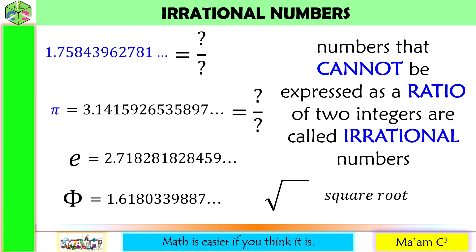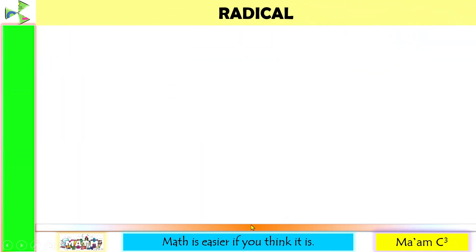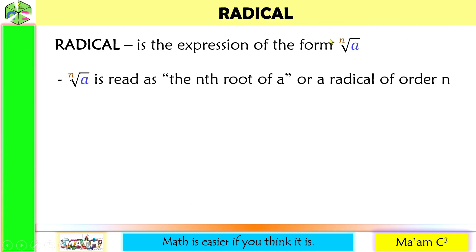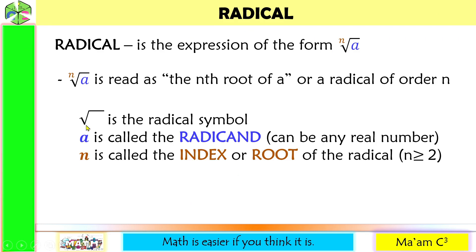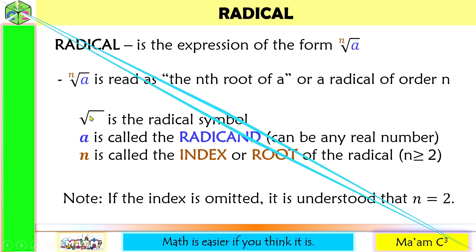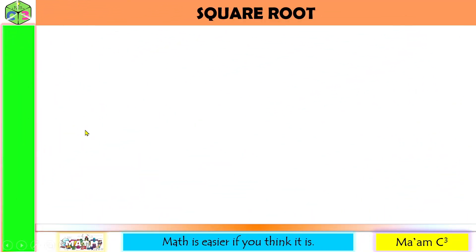For example, the square root of 2. Let us discuss this further. This symbol is called the radical. It is an expression of the form: the n-th root of a, also read as 'a radical of order n.' This is the radical symbol. A, the number inside the symbol, is called the radicand — it can be any real number, positive or negative. N is the index or root of the radical, and n is greater than or equal to 2. If the index is omitted, meaning there is no number shown, it is understood that the value of n is equal to 2. For this video, we are going to talk about square roots.